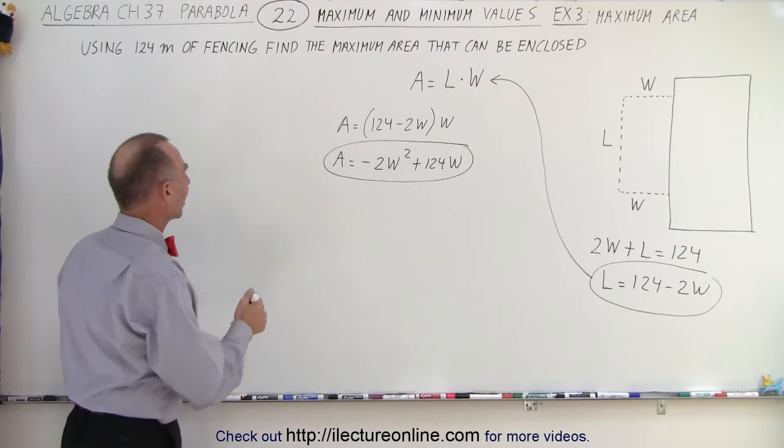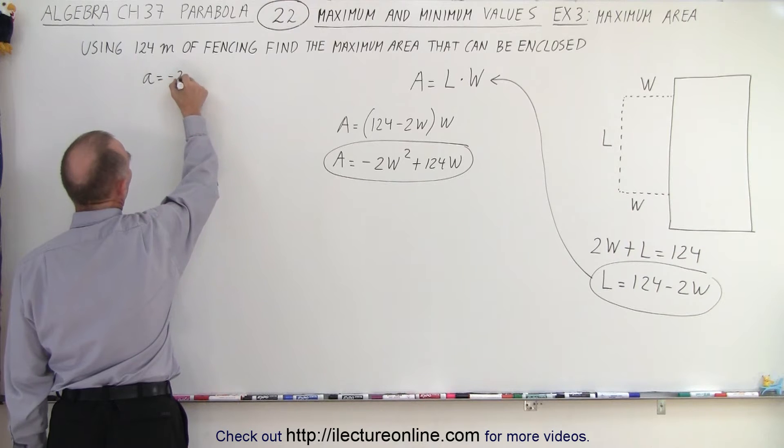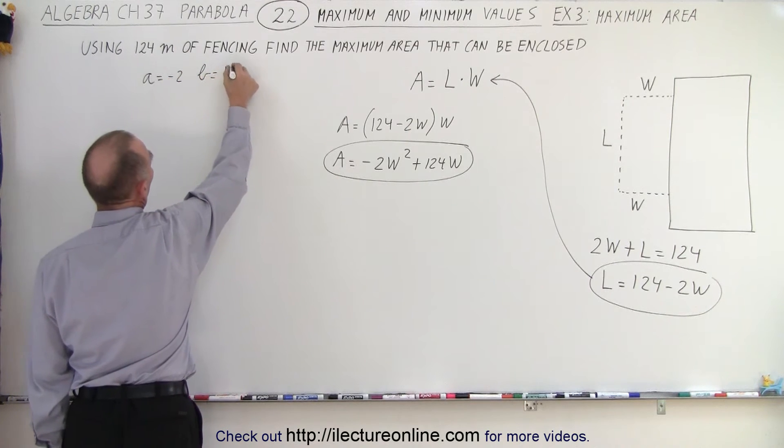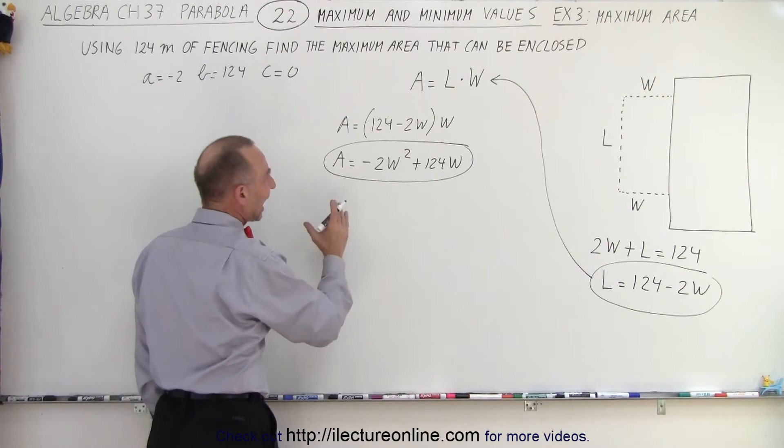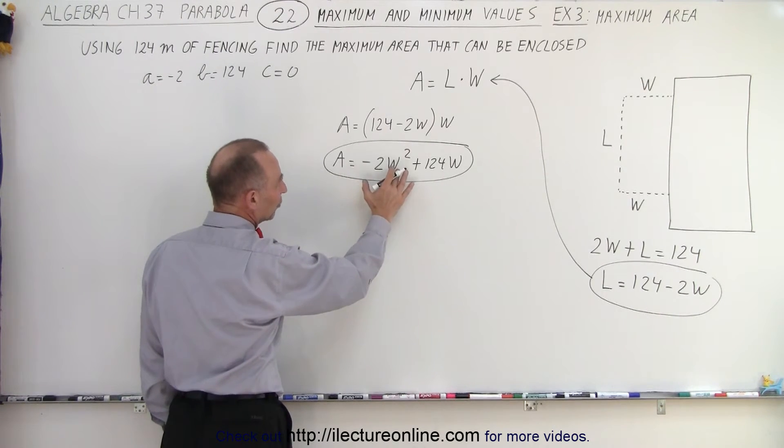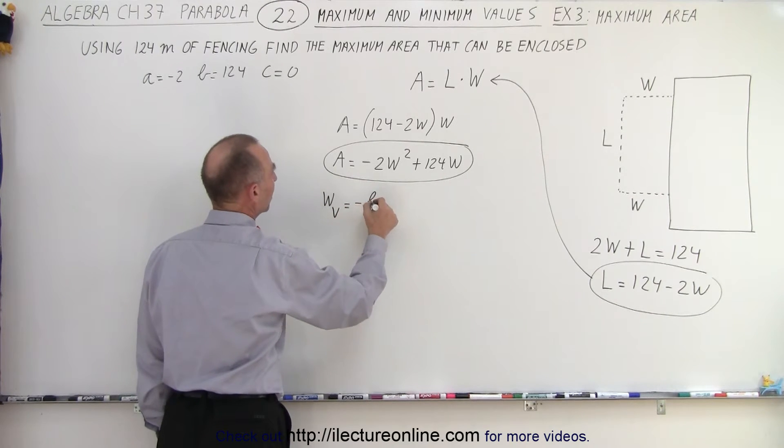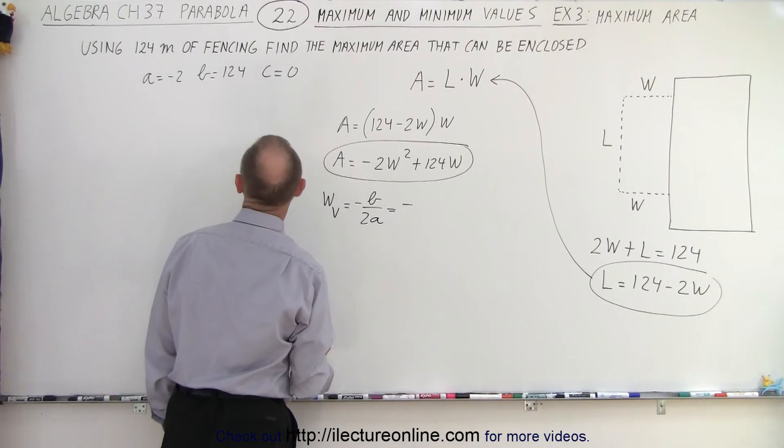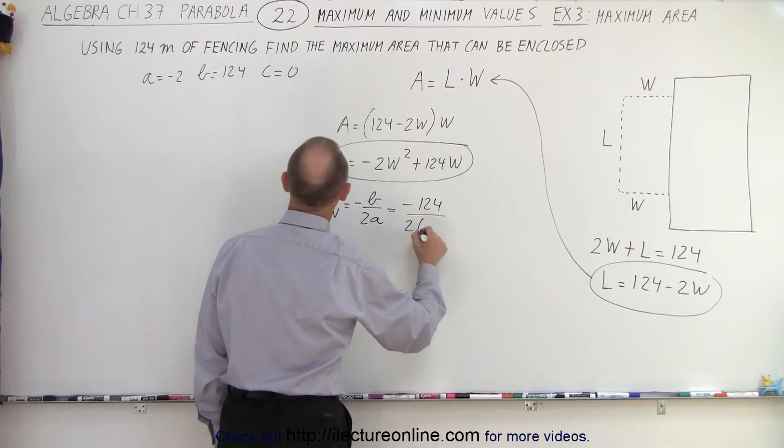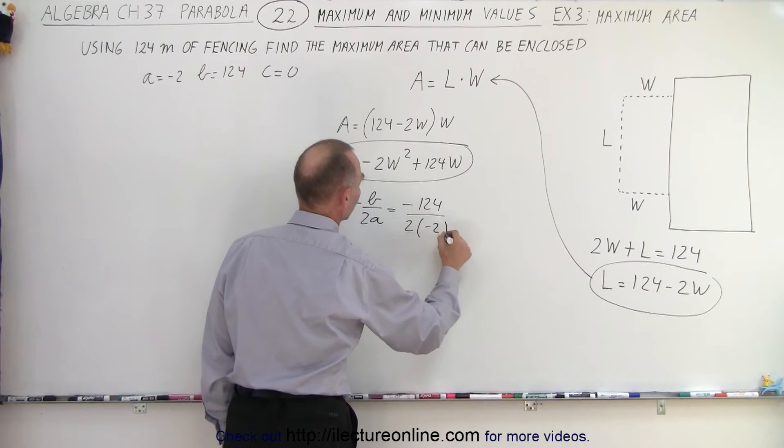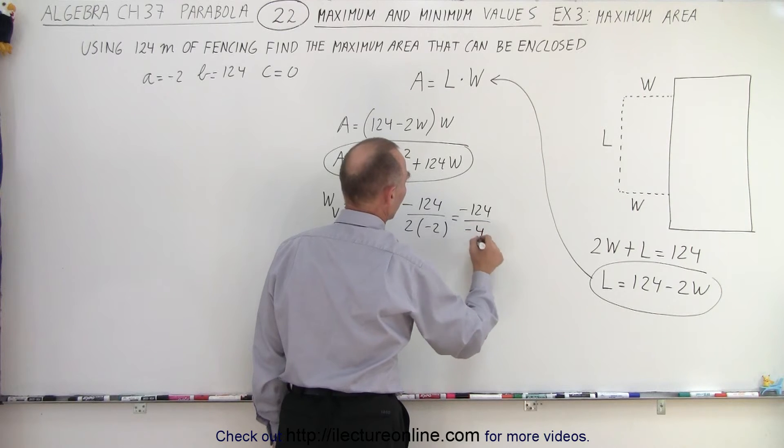Well, we can do that by finding the vertex. Notice that a is equal to negative 2, b is equal to 124, and c is equal to 0. So instead of finding the x-coordinate of the vertex, we're going to find the w-coordinate of the vertex. So w sub v is equal to minus b over 2a. That's equal to minus b, b is 124, and 2a, 2 times a, a is equal to negative 2. So it would be equal to minus 124 divided by negative 4.